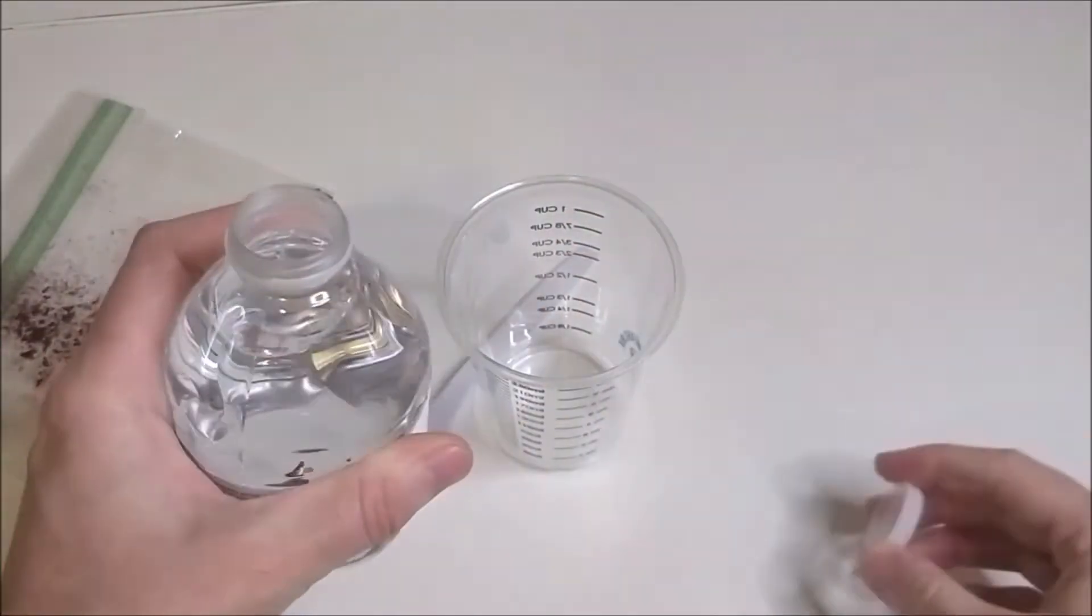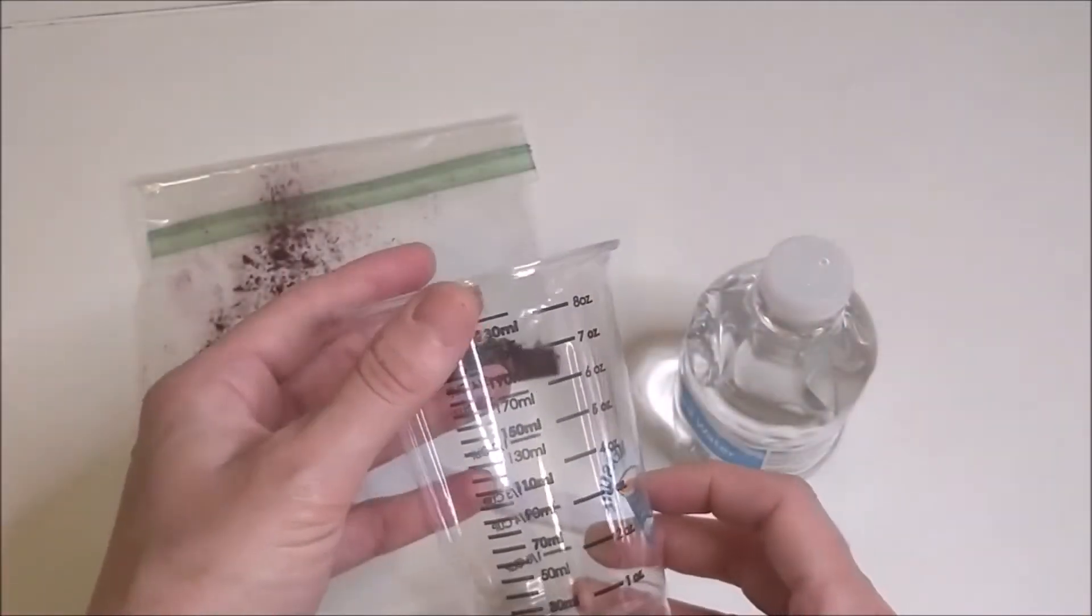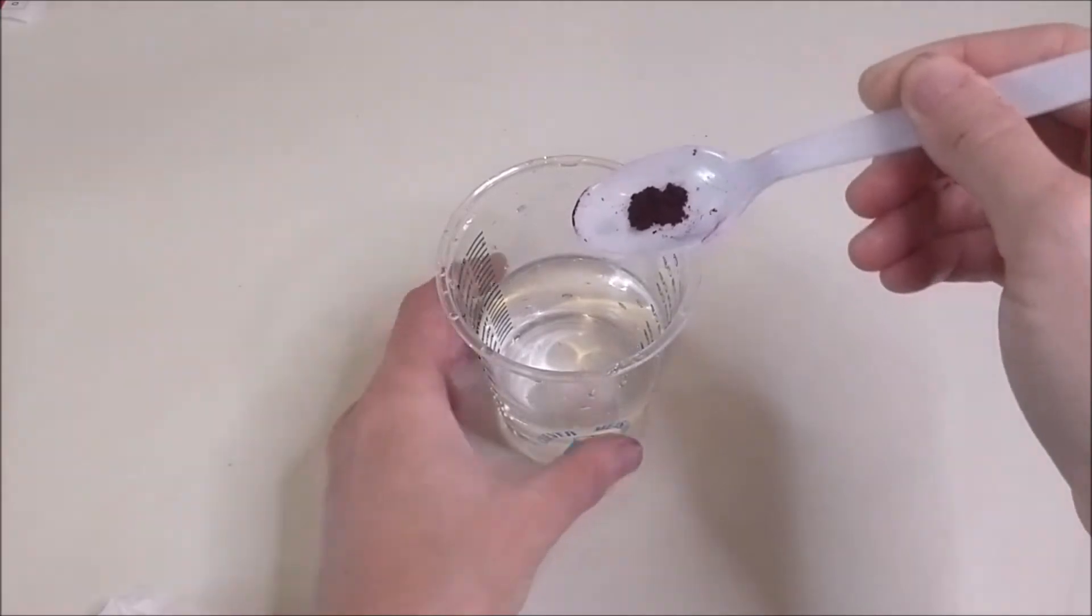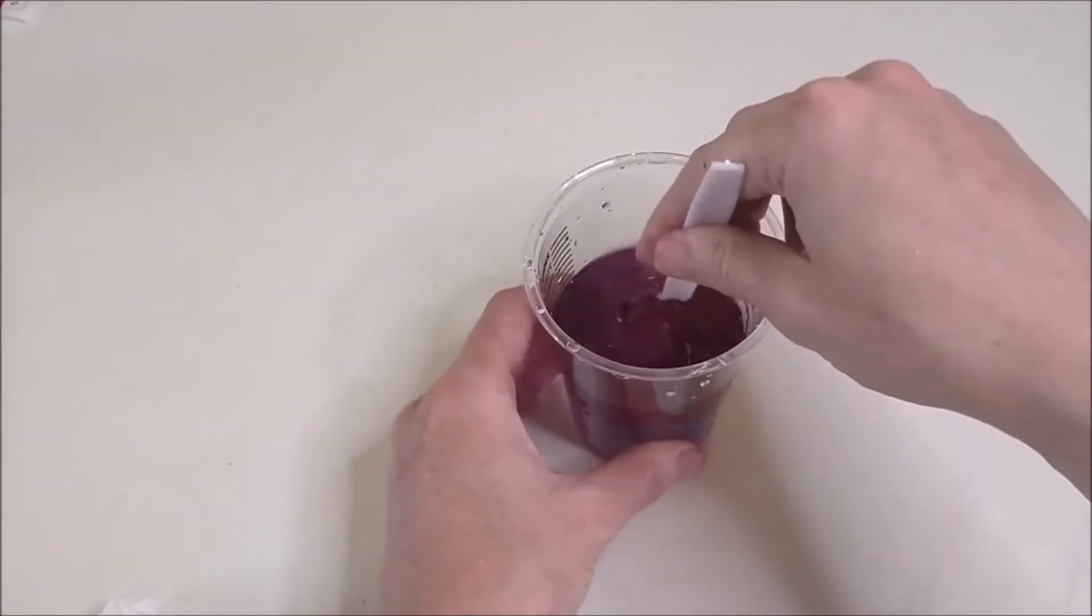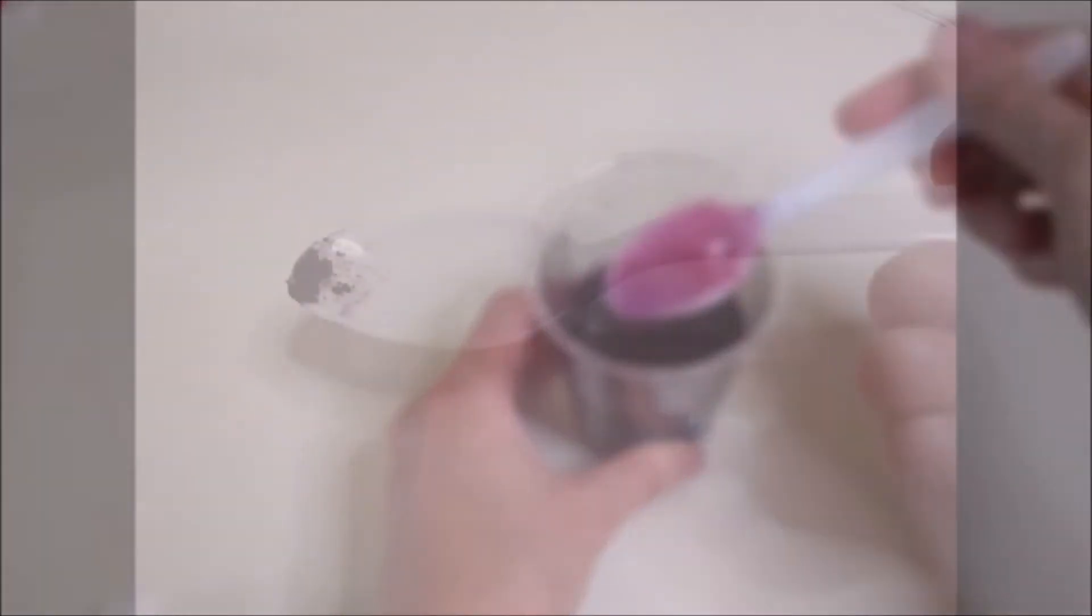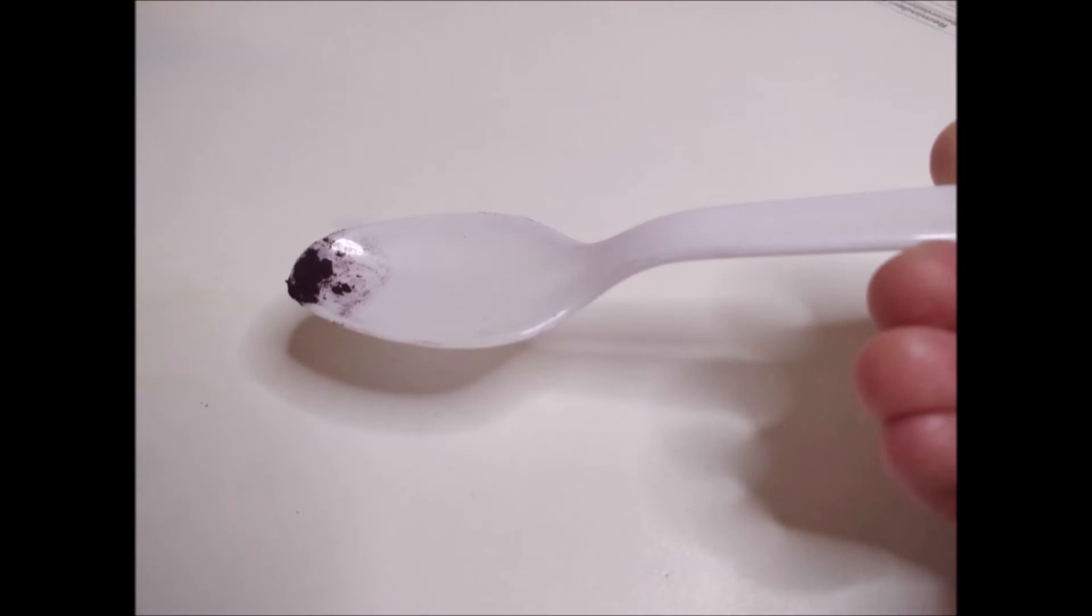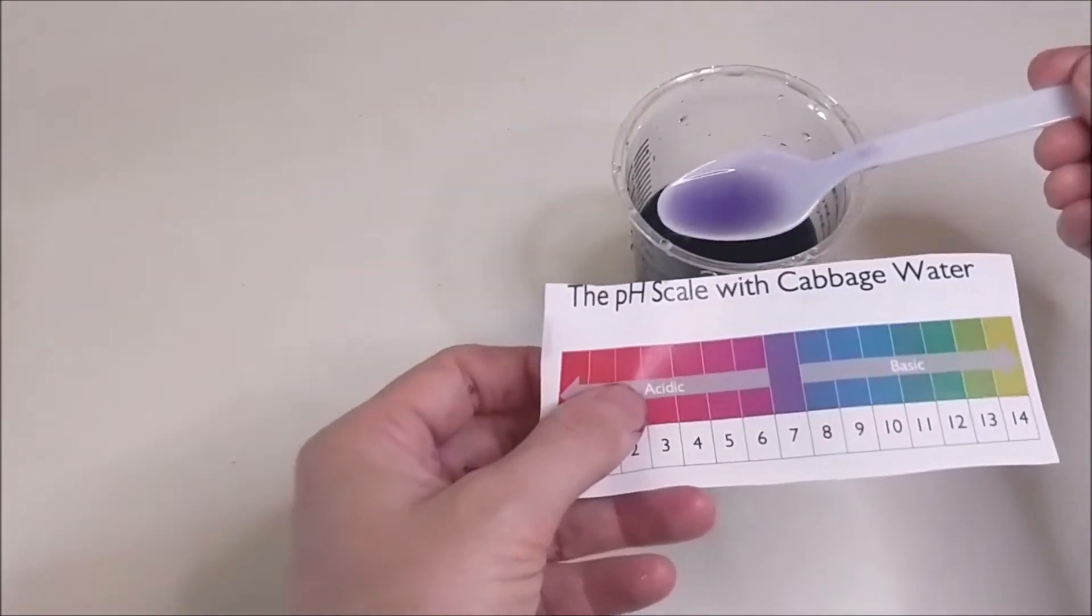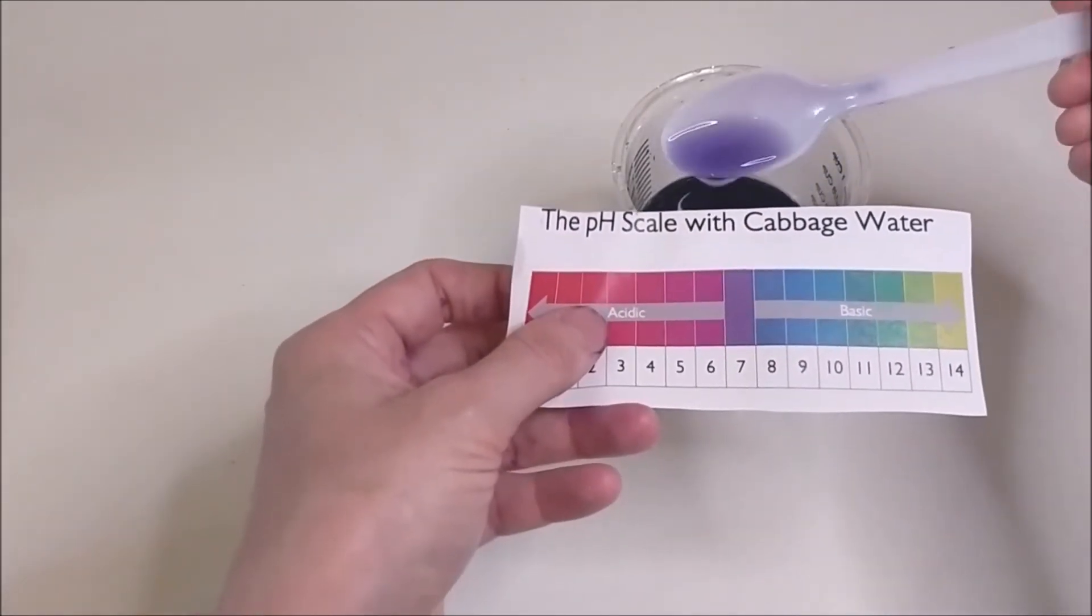Open your water and pour it into your cup to the 110 milliliter line. Then take a tiny scoop of cabbage powder. You don't need very much at all. See, it just covers the tip of the spoon here. Take that tiny little bit of cabbage powder and stir it in. The water will change colors. Use your guide to identify what pH just plain water is.